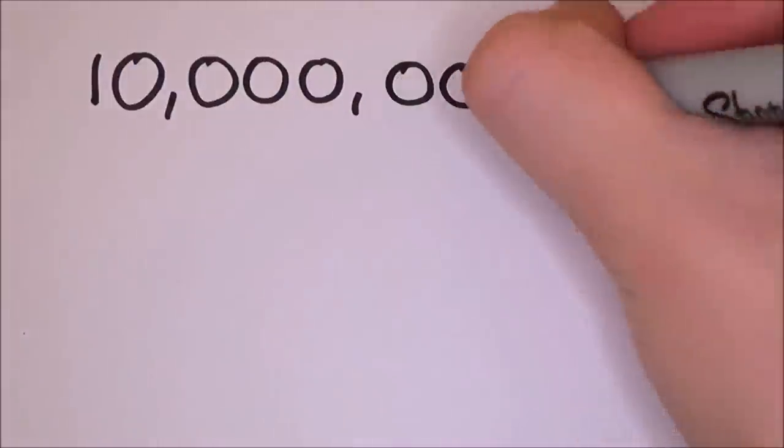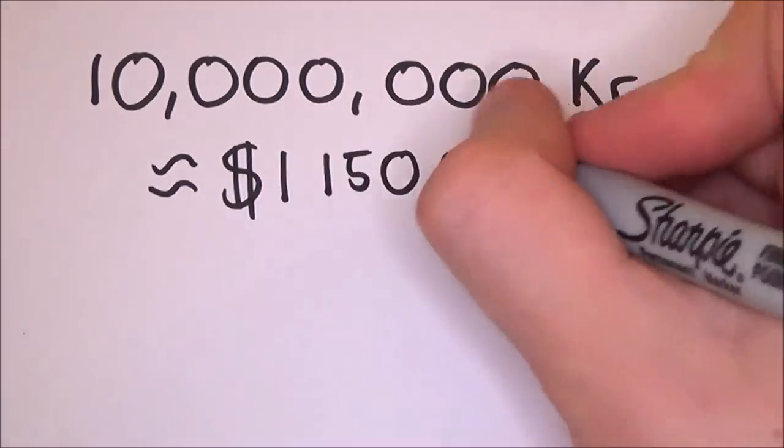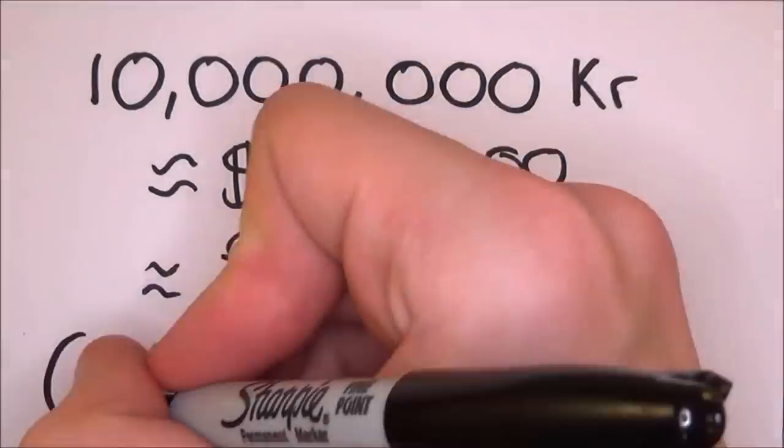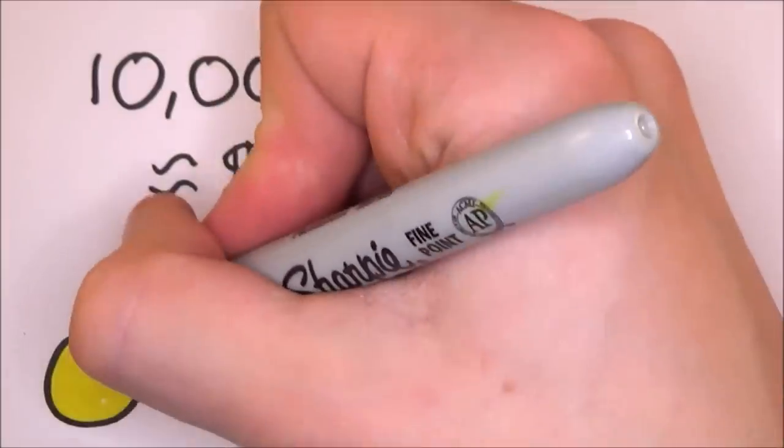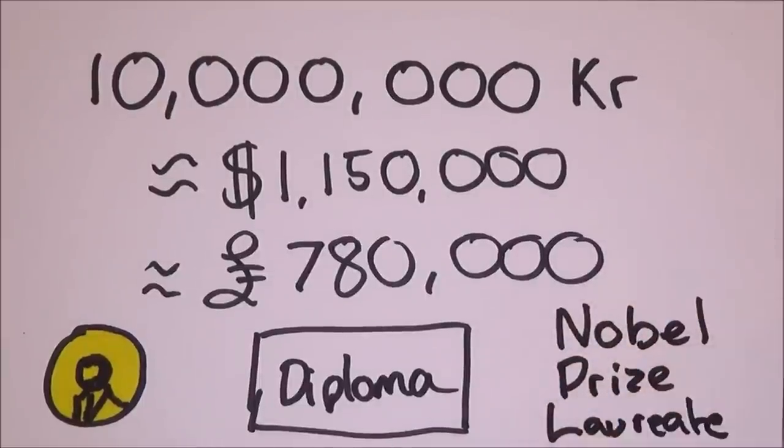Once you have won, they will give you a whole 10 million Swedish crowns, about 1.15 million dollars, or about 780,000 pounds sterling. You will also get a medal, a personal diploma, which is like a certificate, and you're also allowed to use the title Nobel Prize laureate.